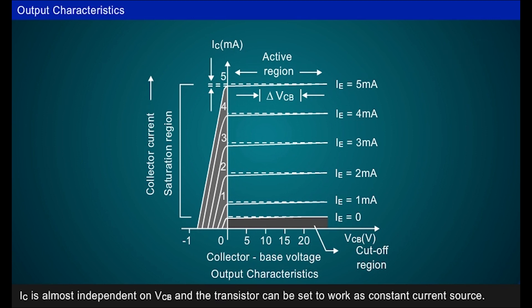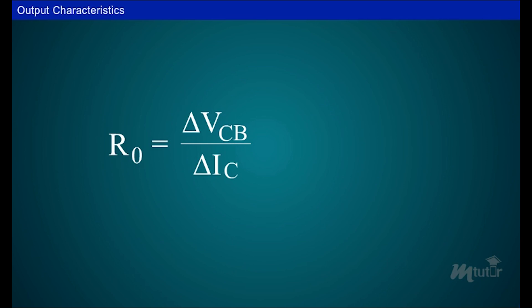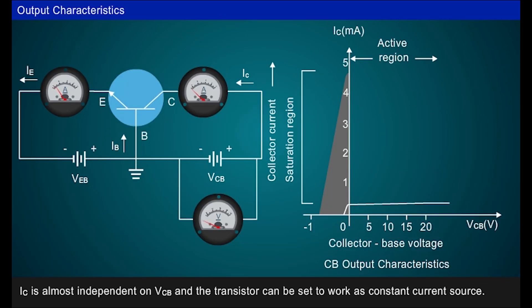This provides very high dynamic output resistance. Dynamic output resistance is the ratio of change in collector base voltage to the resulting change in collector current at constant emitter current IE. As IE increases, IC also increases. Thus, IC depends upon input current IE but not on collector voltage. Hence, input current controls output current.